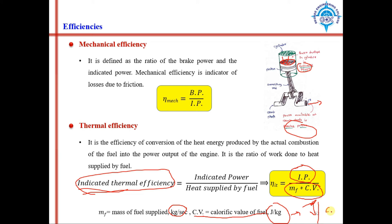The unit becomes Joule per second, which is the unit of power. The unit of indicated power is also Joule per second (Watt), so the units cancel and the ratio is dimensionless. The same applies when taking the ratio of brake power to indicated power for mechanical efficiency.